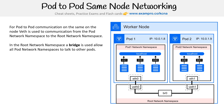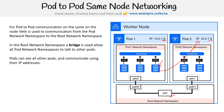In the root network namespace, a bridge is used to allow all pod network namespaces to talk to other pods. That networking component is set up for you — BR0 represents the bridge. Pods can see all other pods and communicate using their IP addresses. Notice that they both have two distinct IP addresses in the same address namespace. So if you were logged into a container and pinged that IP address, you would reach that pod.